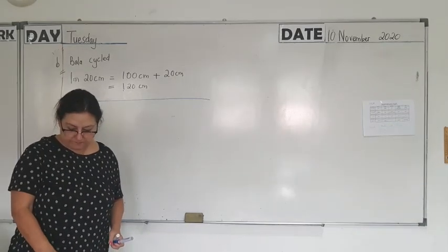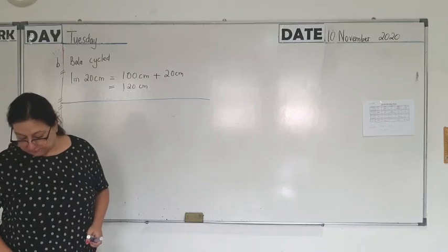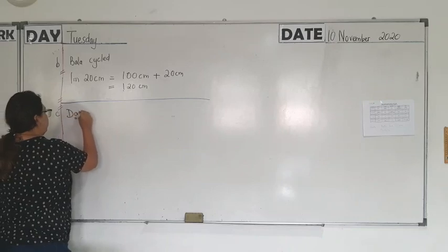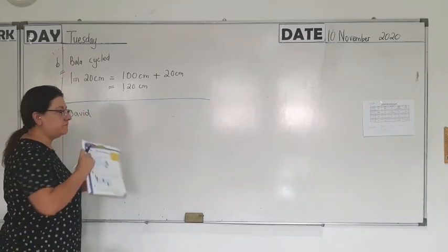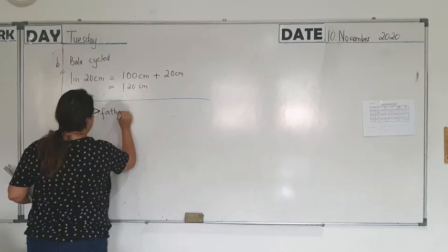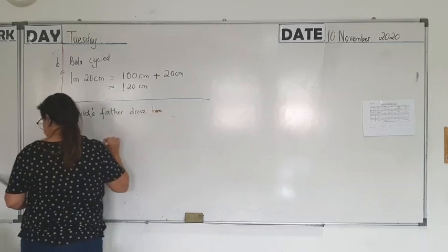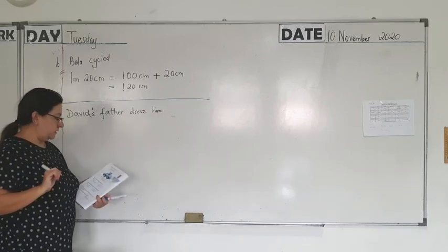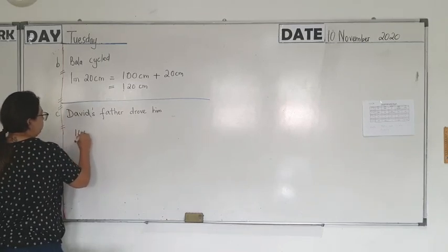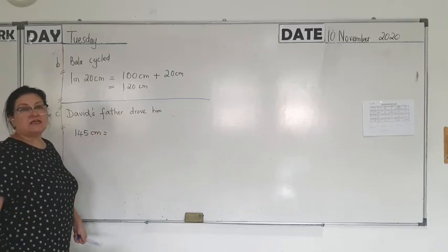David's father drove him. So the last person who went is David's father drove him. So how much distance he travelled is, or the height of David's car is 145 cm. Now I want to change the 145 cm into metres and cm.